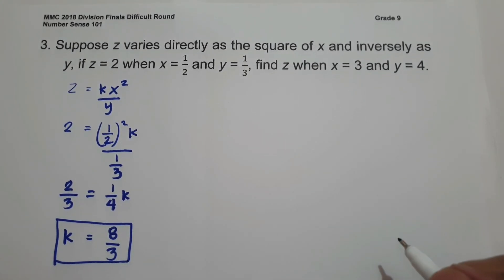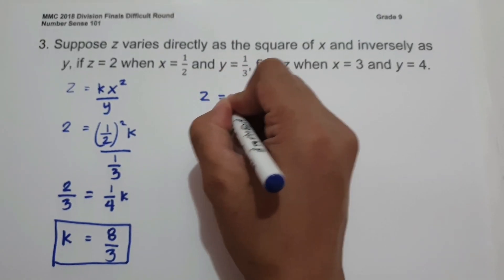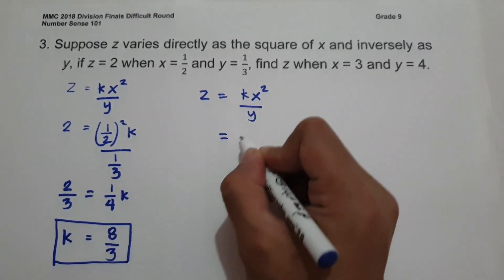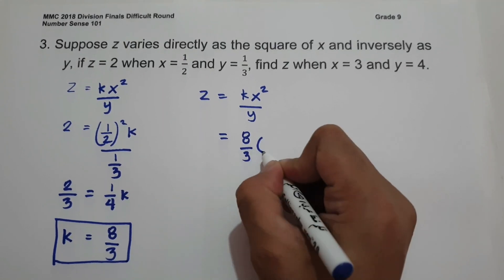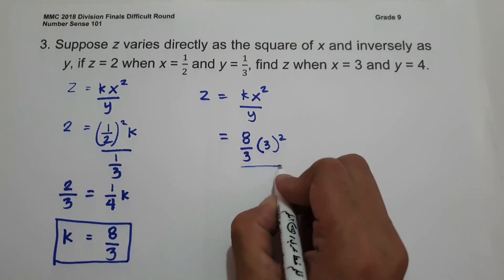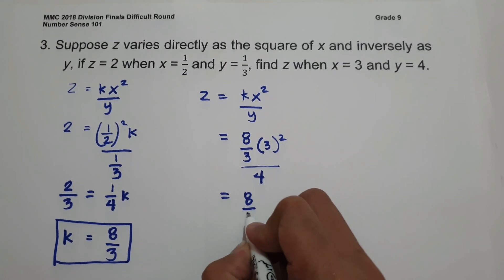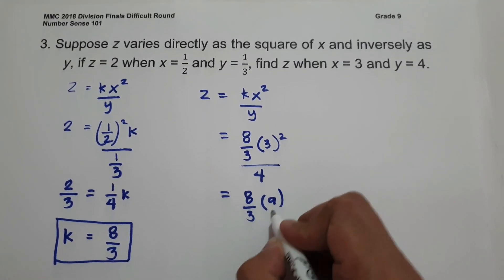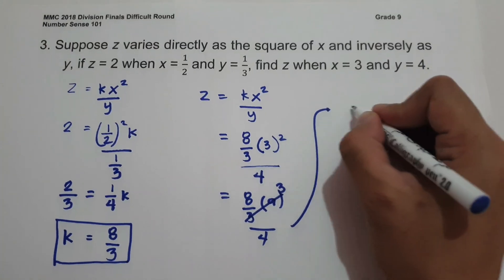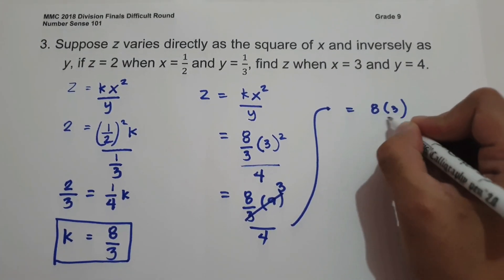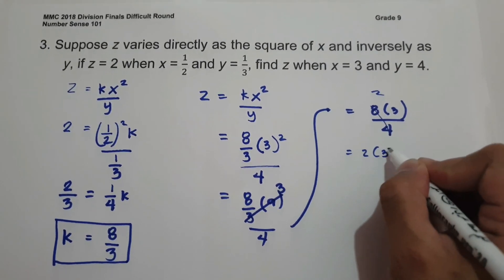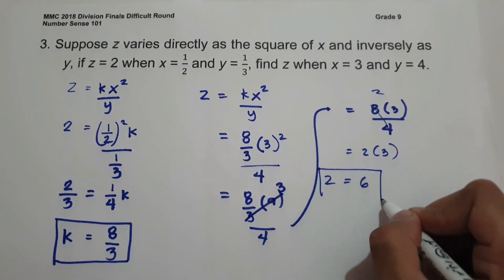Now using K = 8/3 with X = 3 and Y = 4: Z = (8/3) × 3² / 4 = (8/3) × 9/4. Dividing 9 and 3 gives 3, so Z = (8 × 3) / 4 = 24/4 = 6. So the value of Z is 6.